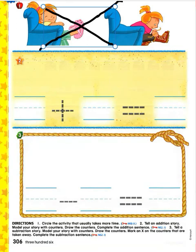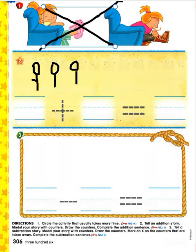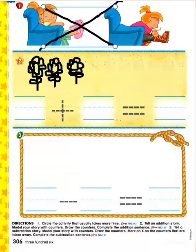Three flowers were beginning to bloom. One, two, three. Go ahead and draw three flowers beginning to bloom. Once you finish up your flowers, make sure you write a number three on the handwriting line to show that there are three flowers in the first group. Then, since this is addition, we'll trace over the plus sign.